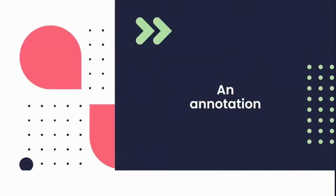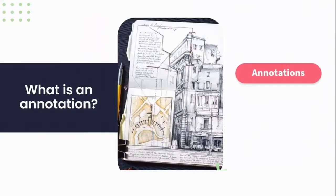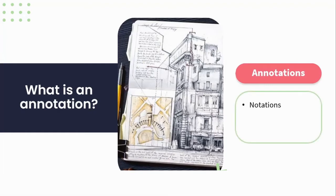That brings us to our next step: annotations — the language to our drawings. But what is an annotation? It's something we use to add detail where detail may be lacking from the drawing. Annotations are the elements that add to our technical drawing to add detail and value, increasing the quality of information that that particular drawing has. Annotations can come in the form of notations — simply text — objects, and dimensional measurement.